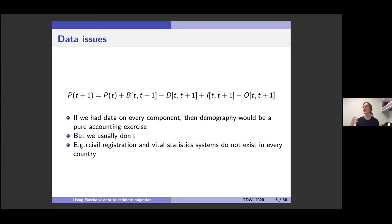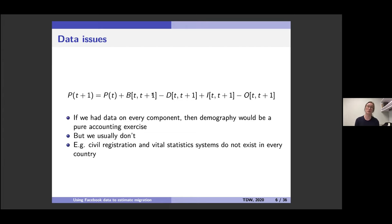In essence demography is very simple — if we had data on every single one of these components, formal demography would just be an accounting exercise. But the interesting thing is that we usually don't have data on all these components, or if we do, we don't have very good data, or the data doesn't agree with itself. So the left-hand side doesn't equal the right-hand side — there's a big error term, and that's where statistical methods come in.